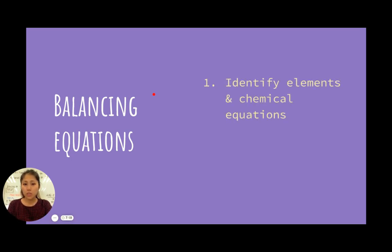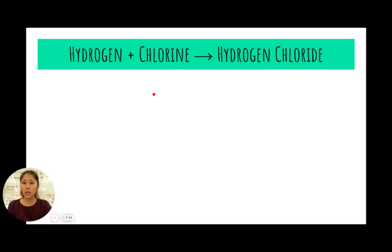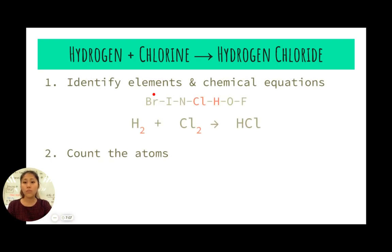The three steps to balancing equations is first identifying your elements, counting your atoms, and then balancing them. Now, say we have a hydrogen and a chlorine, which yields hydrogen chloride. In order for us to first write the chemical equation, we have hydrogen and chlorine, which are both part of the Brinkelhoff. So here we have to note in our subscript, they occur as pairs. And hydrogen chloride, based on the crisscrossing rule that we've learned before, gives us the chemical formula of HCl.